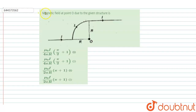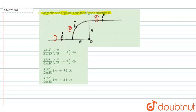Hello, welcome to DoubtNet. In this question, we have to find the magnetic field at the point O due to the given structure. Let us consider the current in each section is given as I. This is the first section, this is the second section, and this is the third section.